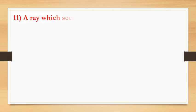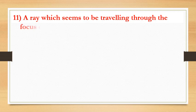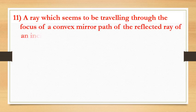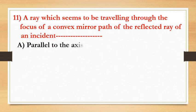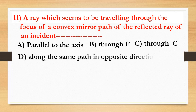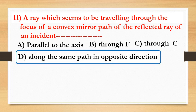Next question: a ray which seems to be traveling through the focus of a convex mirror — what is the path of the reflected ray? Options are: parallel to axis, through the focus, through the center C, or along the same path in the opposite direction. The answer is along the same path in the opposite direction.